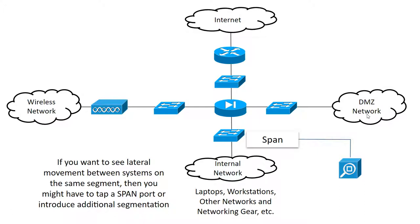Now, we don't know what the beachhead system was in this particular intrusion. So, if the beachhead occurred in the DMZ, and then the internal network was where the domain controller was — and sometimes people do that, they'll have a system in the DMZ administered by a domain controller — you could see RDP traffic from the beachhead down to the domain controller, because it is passing through that sensor seeing the north-south traffic. Similarly, if there was the victim in a wireless network and it came through this way, you would see that traffic as well.